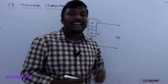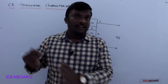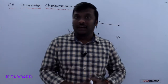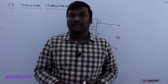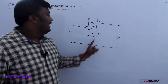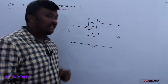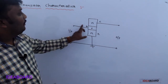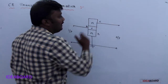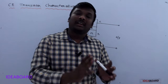In the common emitter configuration — if you didn't watch the previous video, please watch it first. The emitter is common for both input and output, the emitter is earthed, input is taken between base and emitter, and output is taken between collector and emitter.